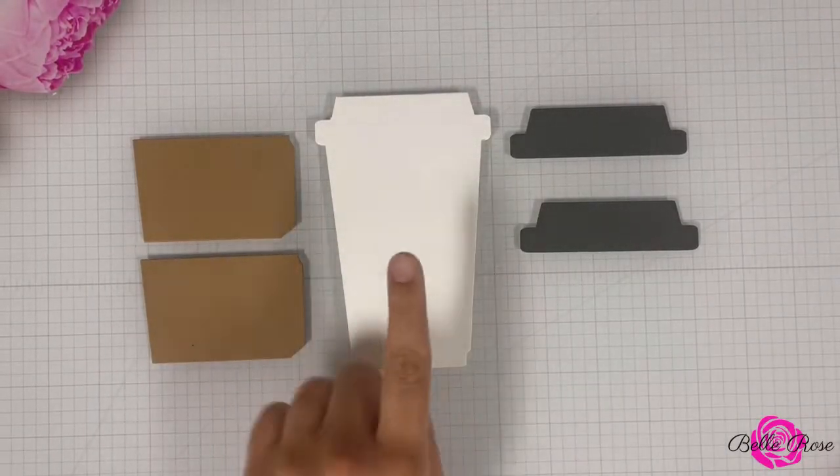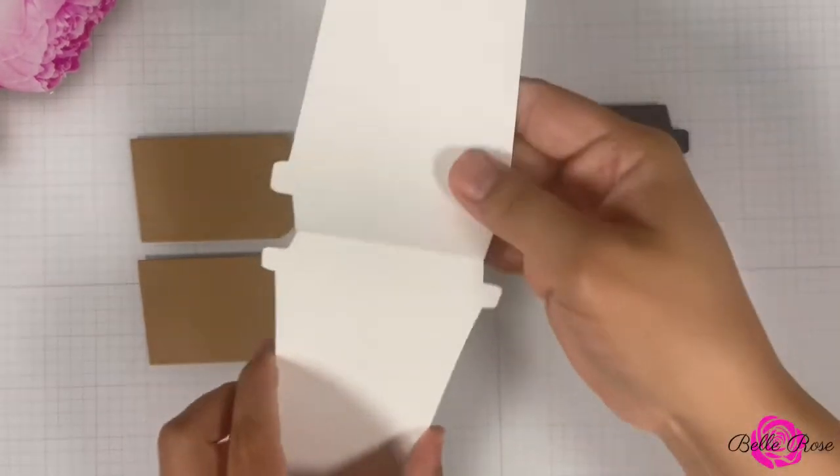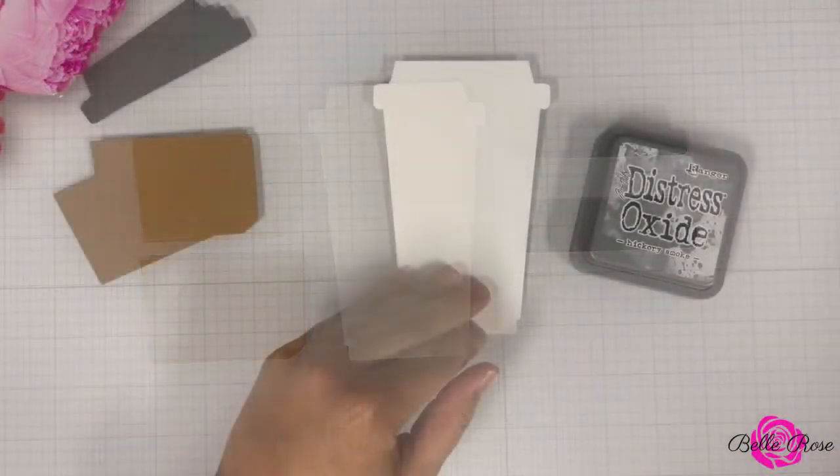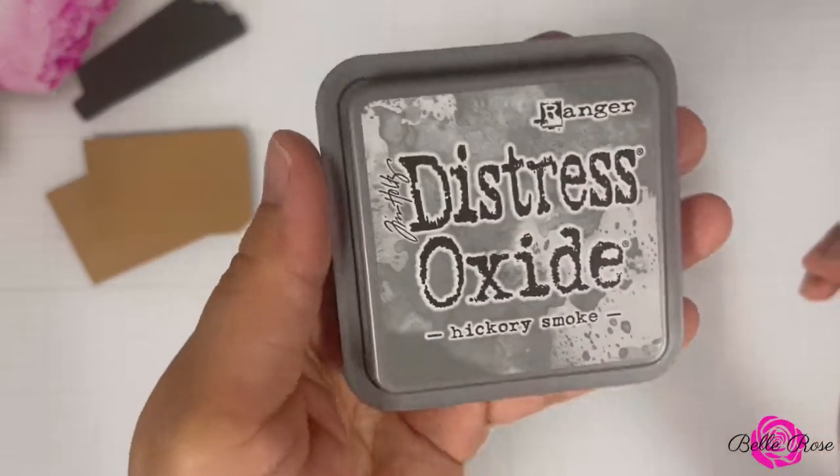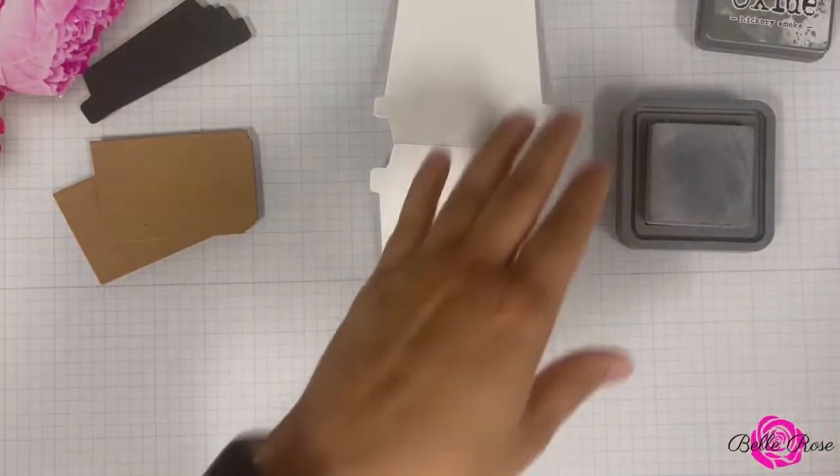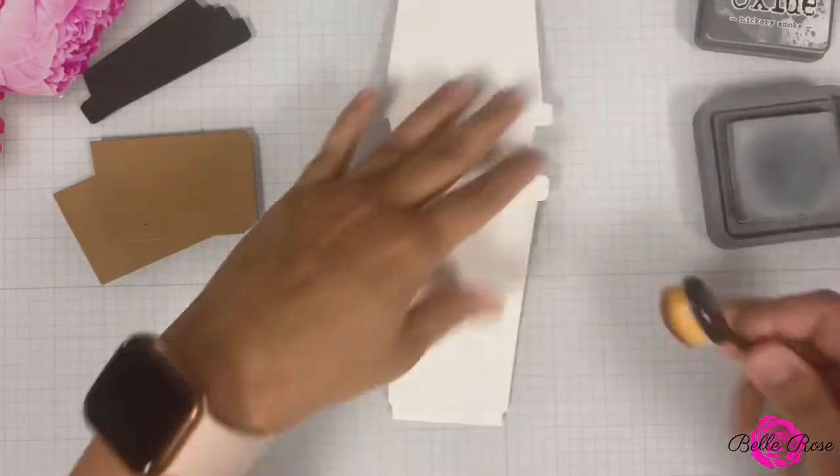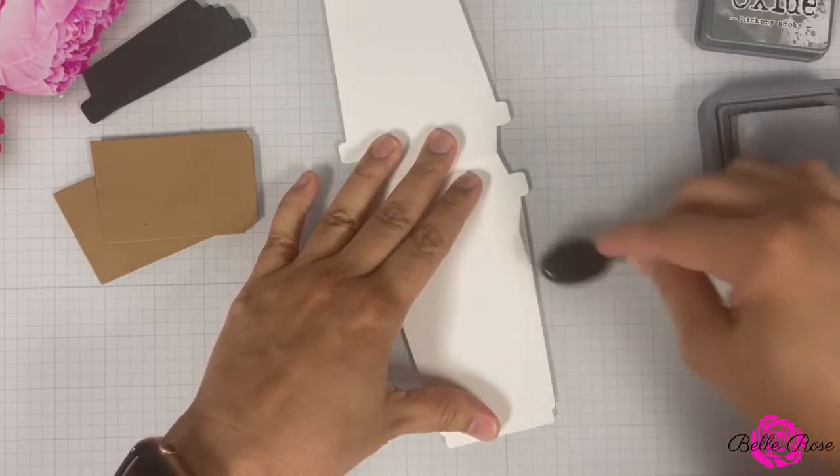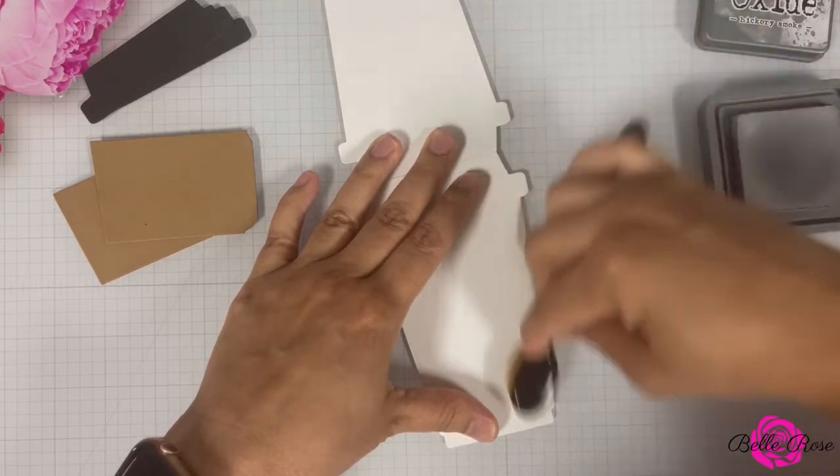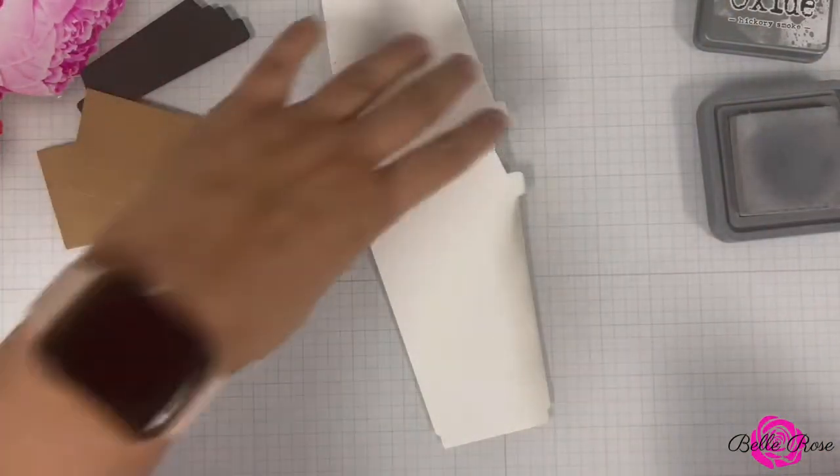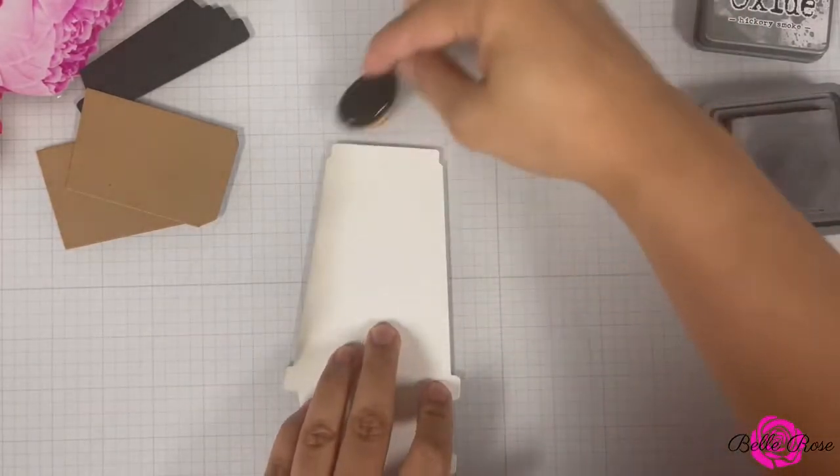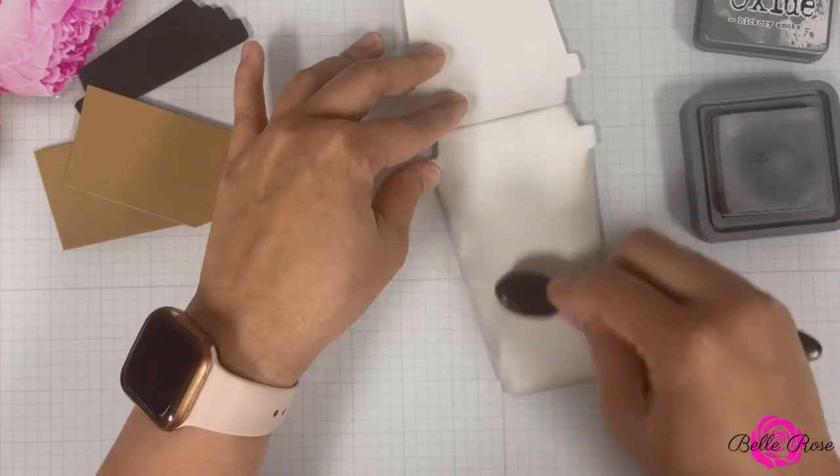Off camera, I did die cut the coffee cup card base and the two pieces to resemble the lid and the sleeve. I'm now going to bring in Distress Oxide's Hickory Smoke and using my blending brush, I'm going to add shading to the coffee cup. This is actually one of my absolute favorite techniques. I love using my oxides to add shading and color to my cardstock.